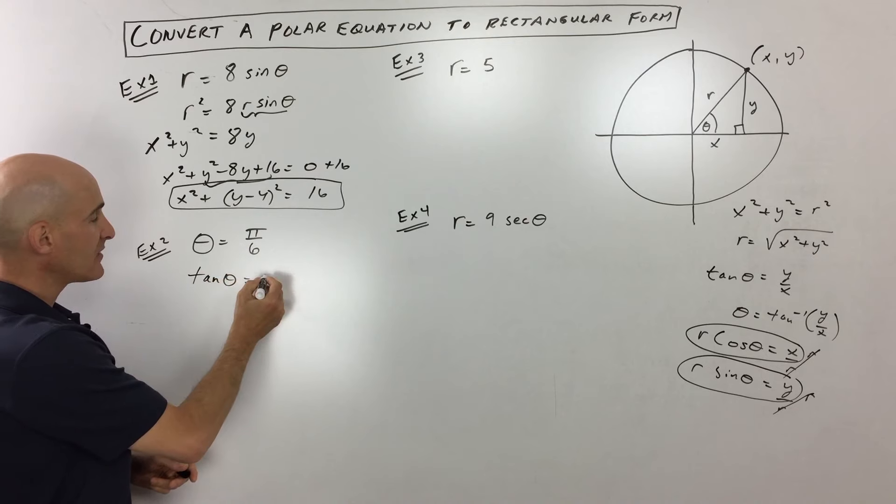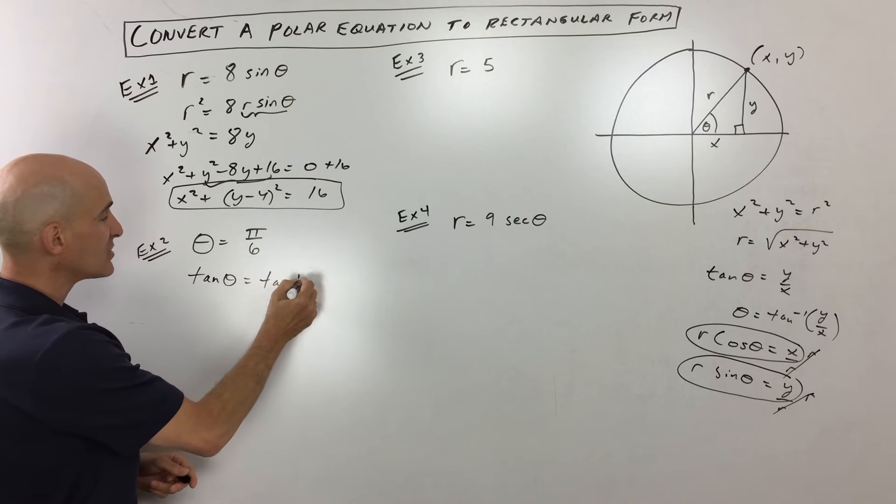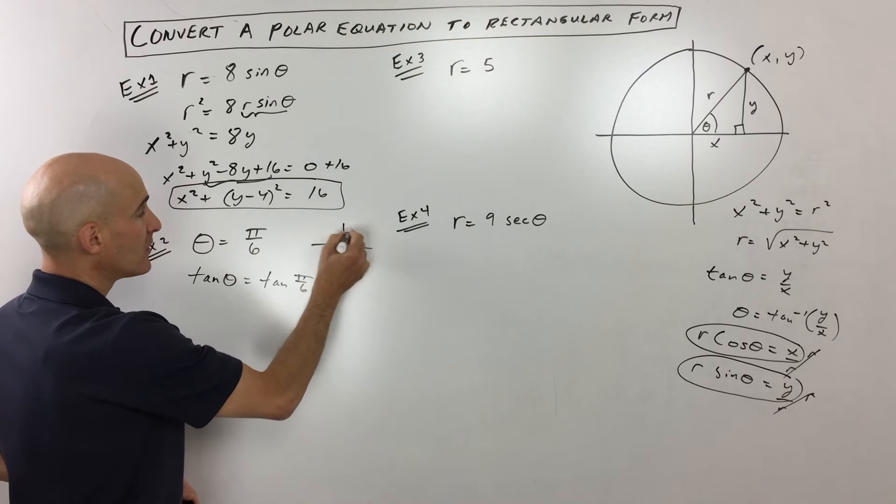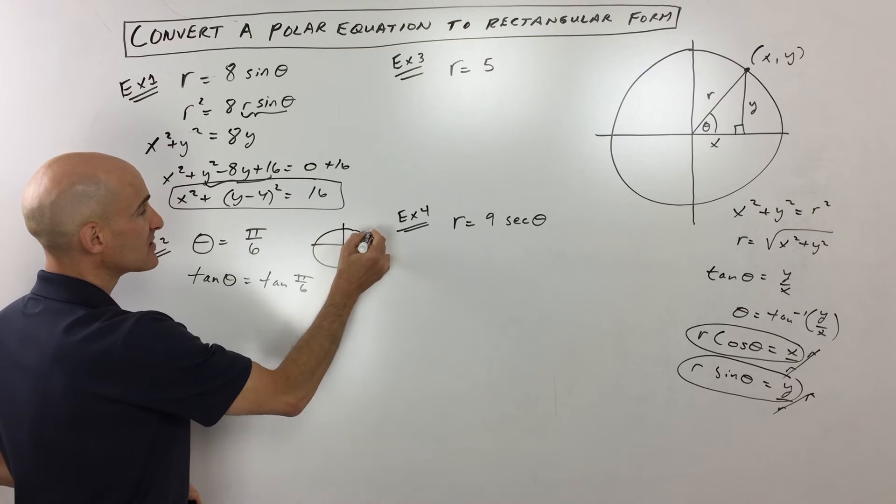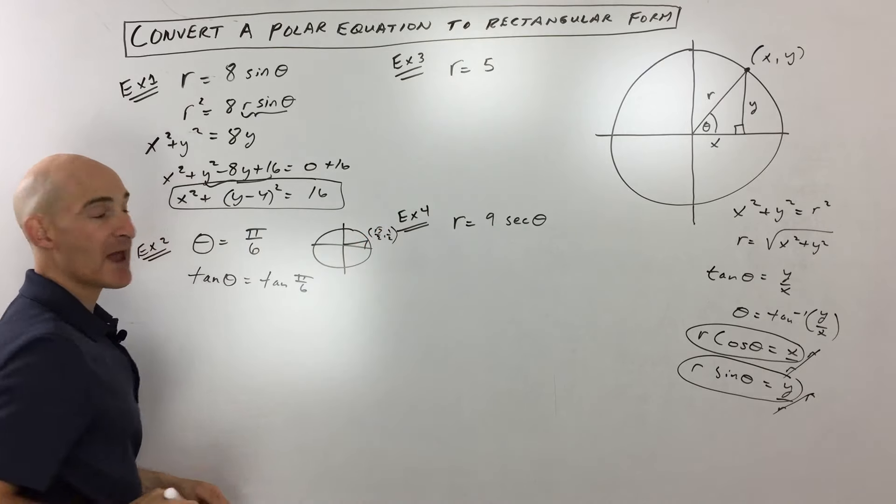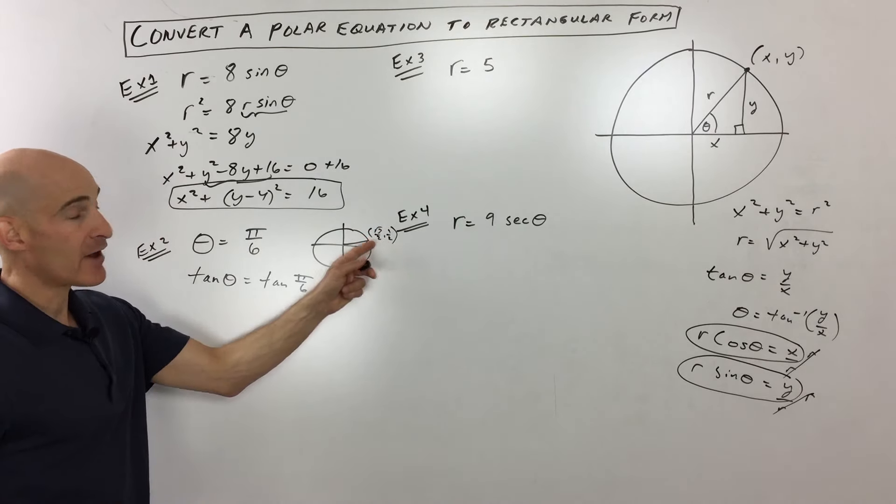So tangent of theta is equal to the tangent of pi over six. Now you know from your unit circle that over here at pi over six, this is the coordinate square root three over two comma one half. And the tangent is the y value over the x value. So if you take y divided by x, you get square root three over three after you rationalize.